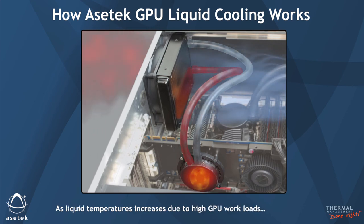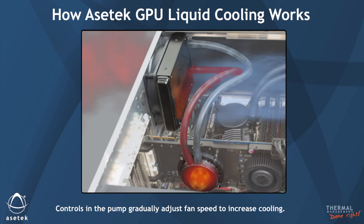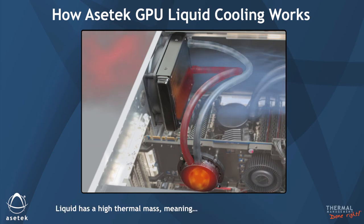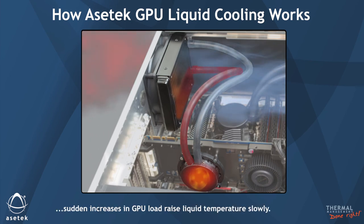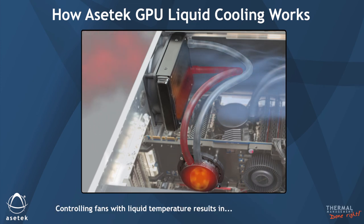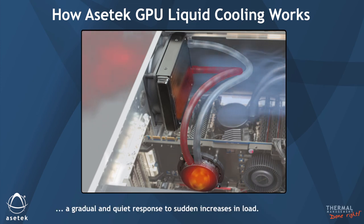Sensors in the pump monitor liquid temperature. As liquid temperature increases due to high GPU workloads, controls in the pump gradually adjust fan speed to increase cooling. Liquid has a high thermal mass, meaning sudden increases in GPU load raise liquid temperature slowly.